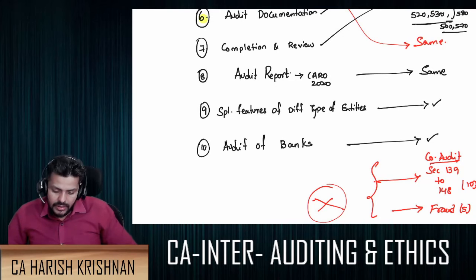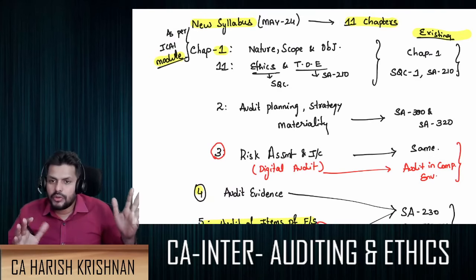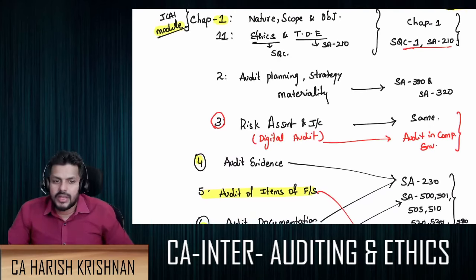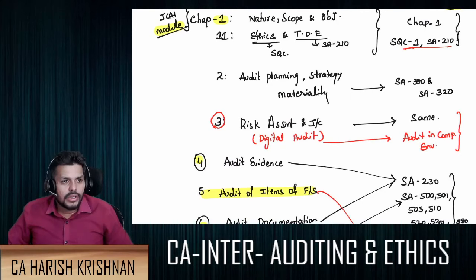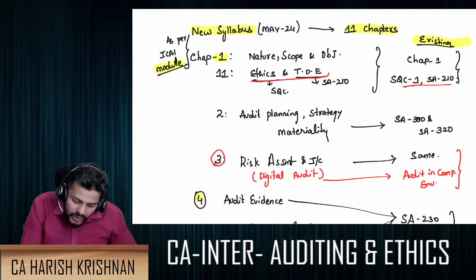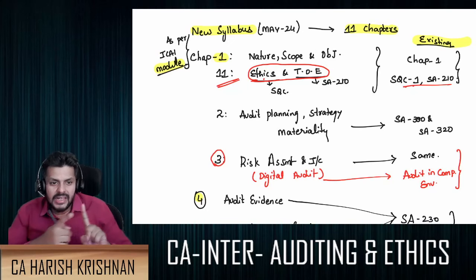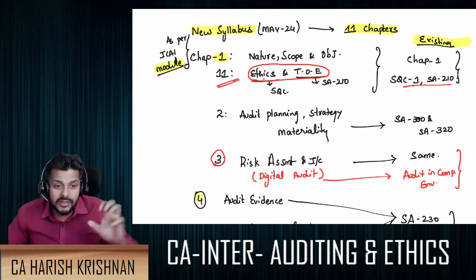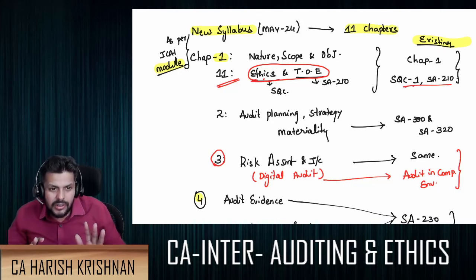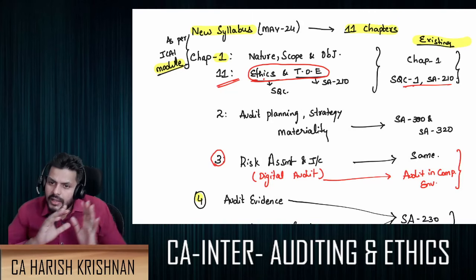The reason I didn't map by institute chapter numbers is that different people use different books, so I kept it useful for a general audience. Whichever book you use, search for the content — it's very much there. Even in the new syllabus, though the subject is now called 'Auditing and Ethics,' they have introduced only one new chapter titled 'Ethics and Terms of Engagement,' whose contents — self-review threats, self-interest threats, advocacy threats, independence in mind, independence in appearance, and quality control aspects — are all very much discussed in books from November 23 and prior.